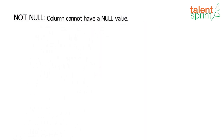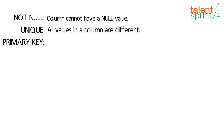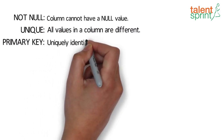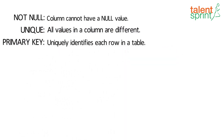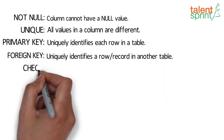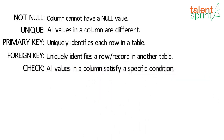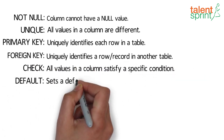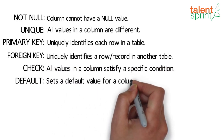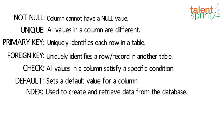NOT NULL ensures that a column cannot have a null value. UNIQUE ensures that all values in a column are different. PRIMARY KEY is a combination of NOT NULL and UNIQUE — it uniquely identifies each row in a table. FOREIGN KEY uniquely identifies a record in another table. CHECK ensures that all values in a column satisfy a specific condition. DEFAULT sets a default value for a column when no value is given by the user. INDEX is used to create and retrieve data from the database very quickly.